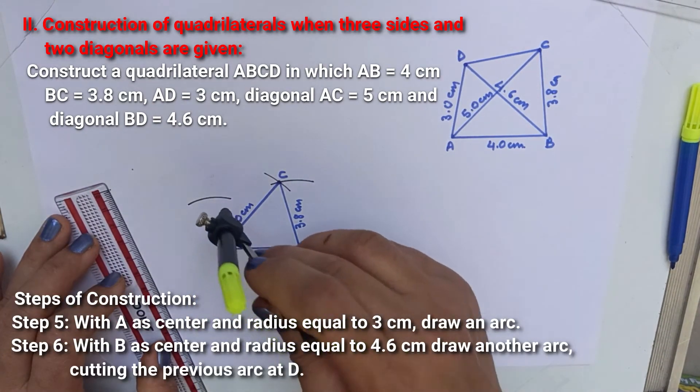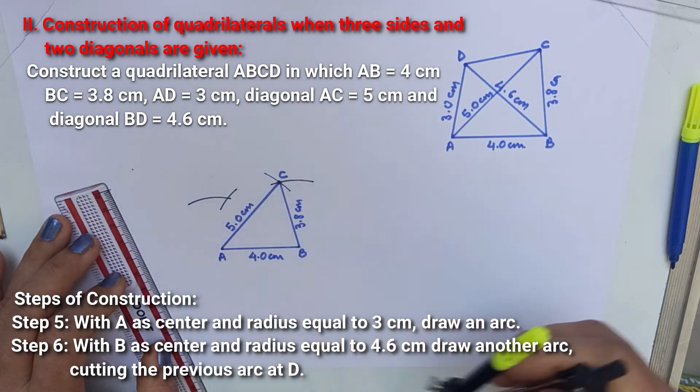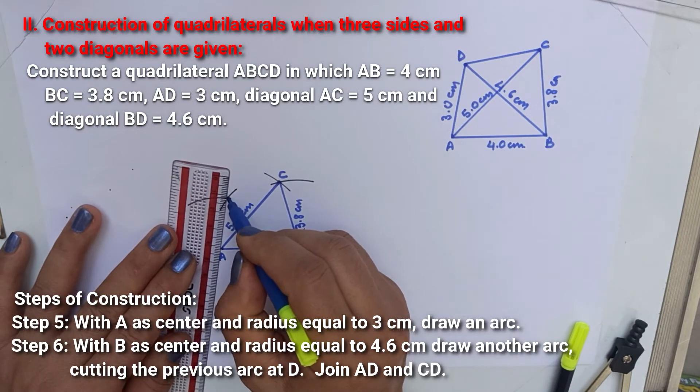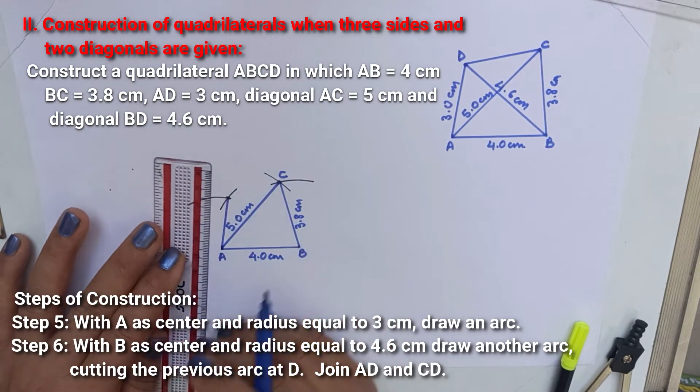With A as center, draw an arc equal to 3 cm, and B as center, draw another arc cutting the previously drawn arc. Now join this intersecting point with A and C.